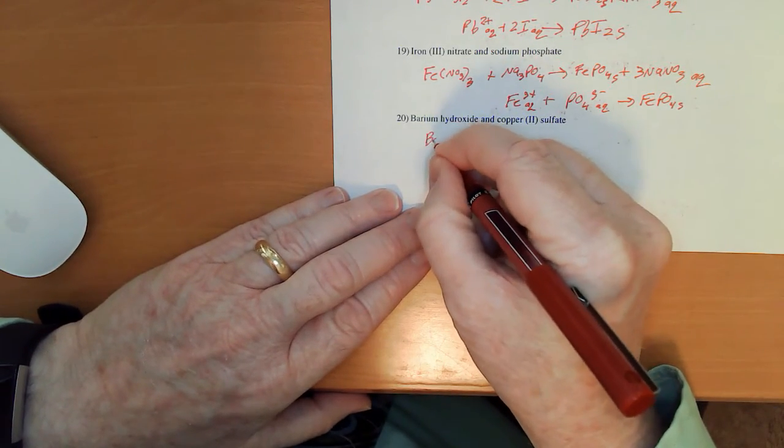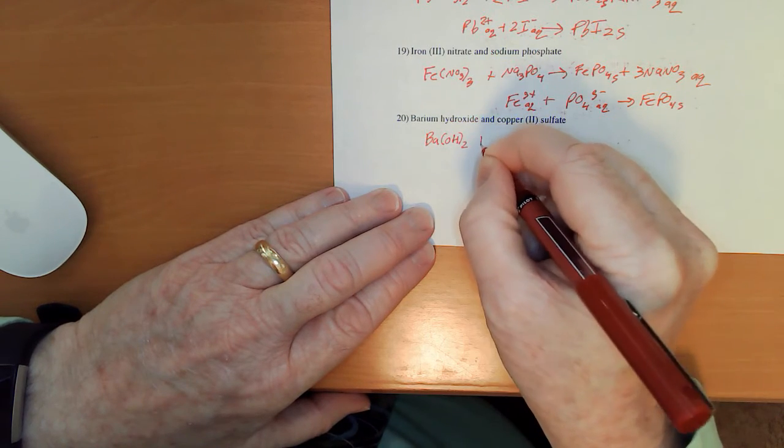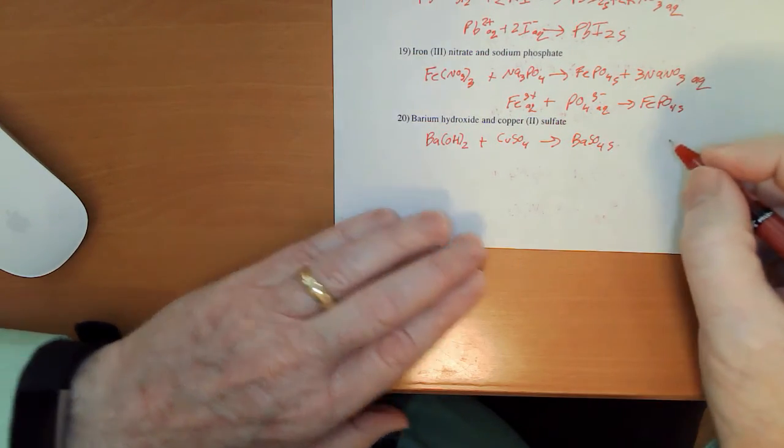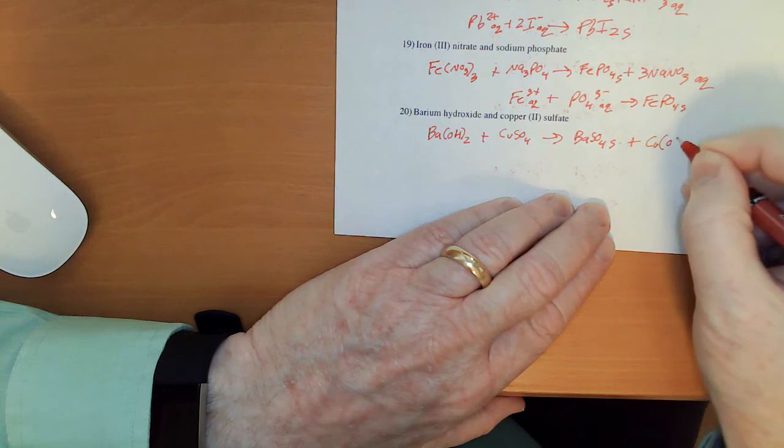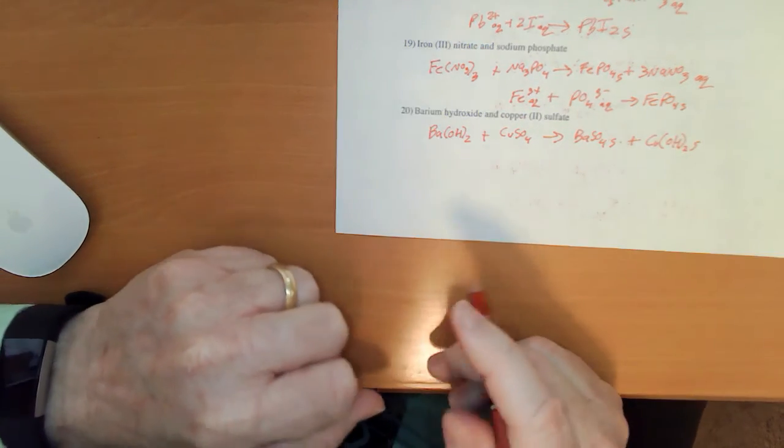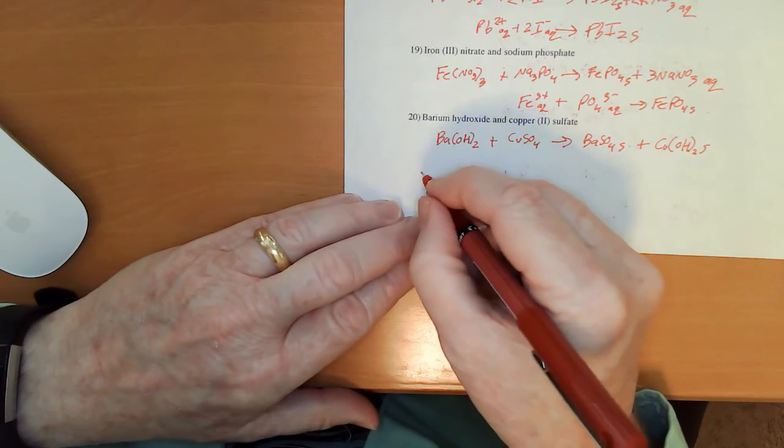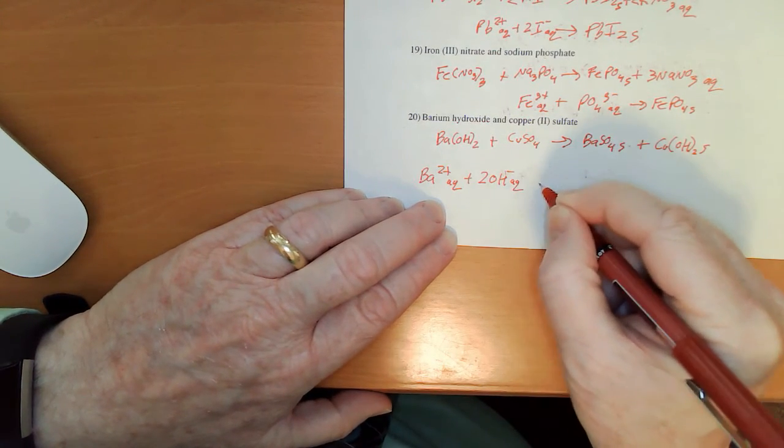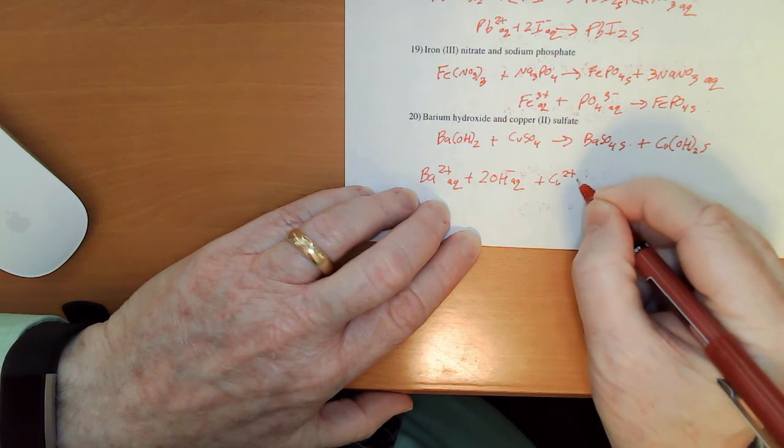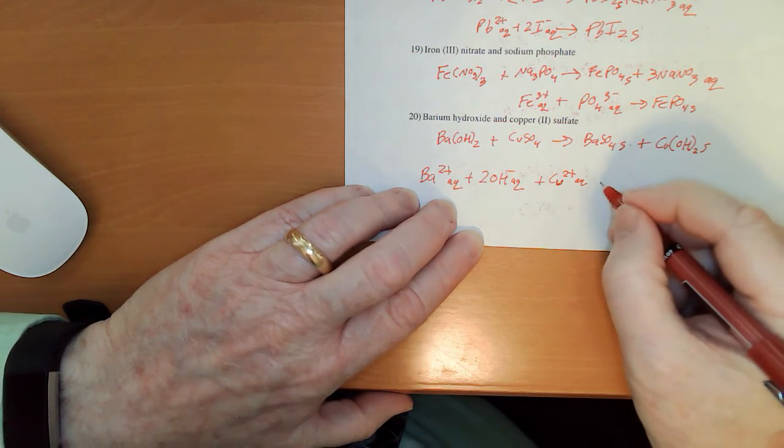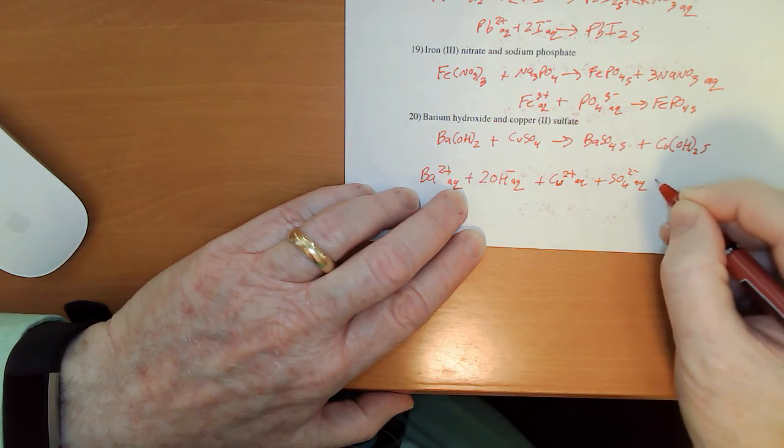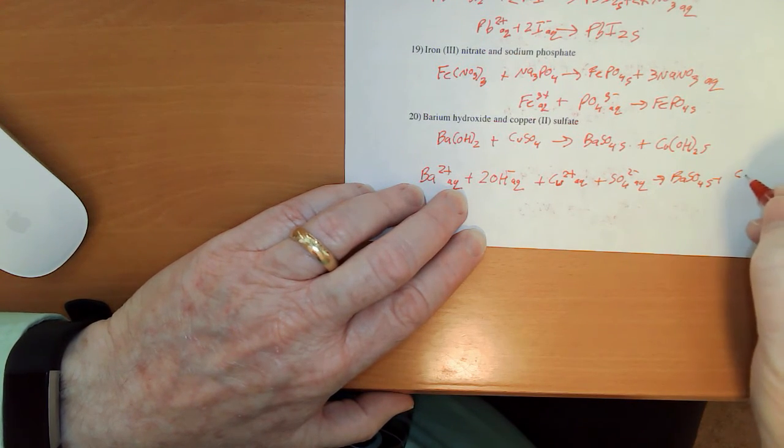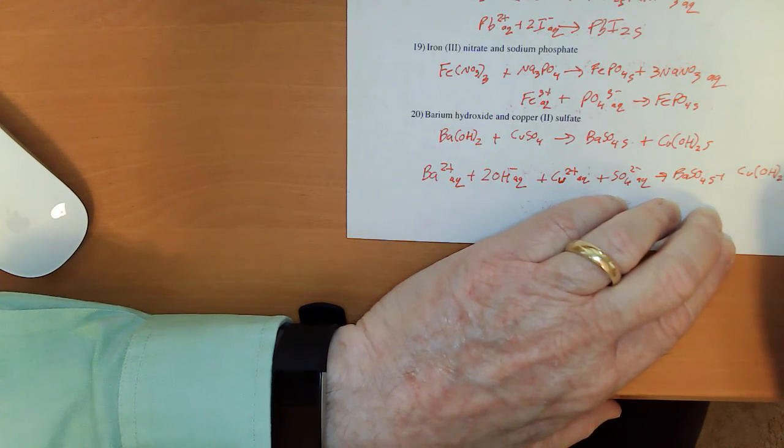And now, for our last one, we have barium hydroxide and copper sulfate mixing to give us barium sulfate. I recognize right away as a solid. I've done it a few times today. And copper hydroxide, I also recognize as a solid. We've done that today. So, what I'm going to end up with is a double precipitate one more time. Ba 2 plus aqueous plus 2 OH minus aqueous plus Cu 2 plus aqueous plus sulfate aqueous to give me BaSO4 solid and Cu OH sub 2 solid.